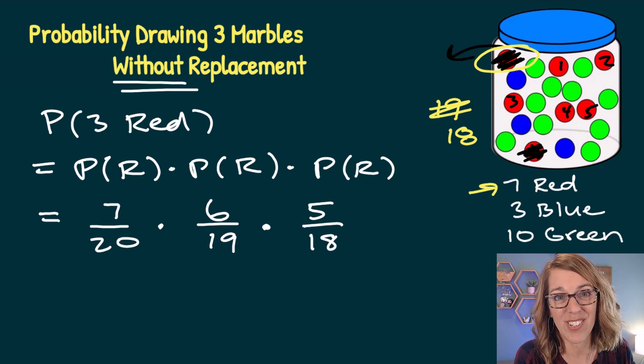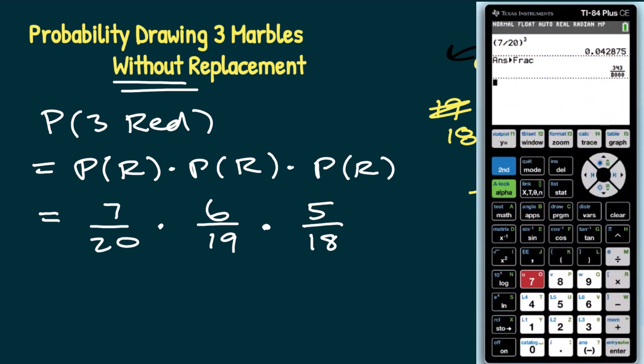Let's go ahead and put this one into the calculator. So I've got seven over 20 times six over 19 times five over 18. I can do this either as a fraction or as a decimal.